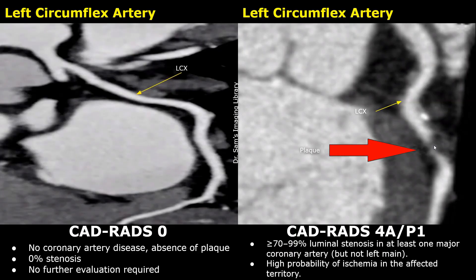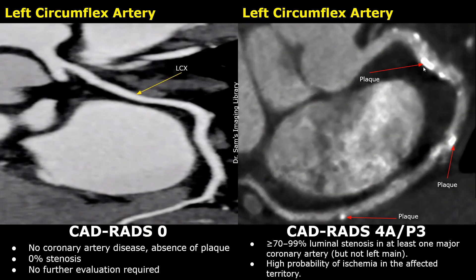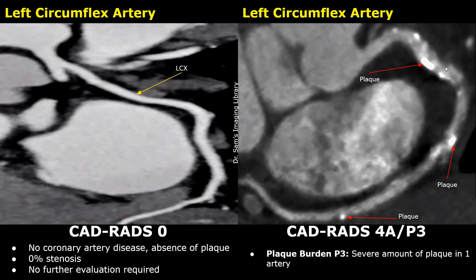This is a CADRADS-4A coronary artery disease. The maximum stenosis seems to be between 70% and 99%. Due to the presence of a severe amount of plaque in a single artery, the plaque burden is P3. If you find many plaques in only one artery and other arteries are normal, you can classify it as P3. So this case is CADRADS-4 P3.